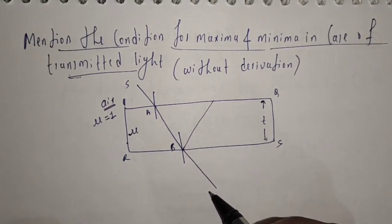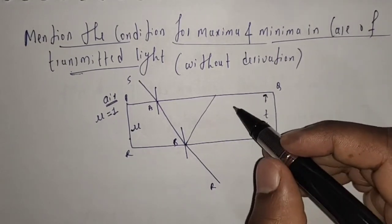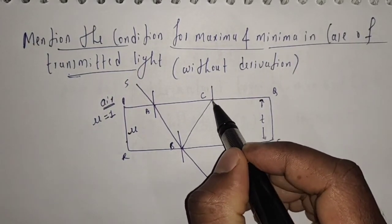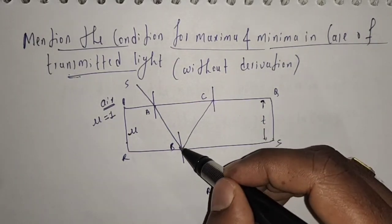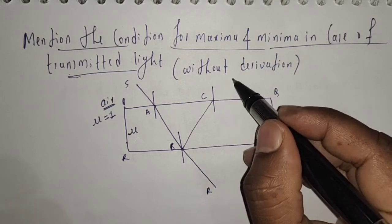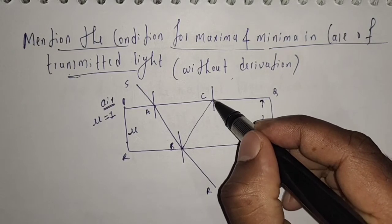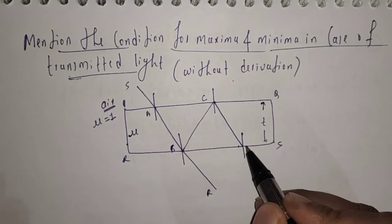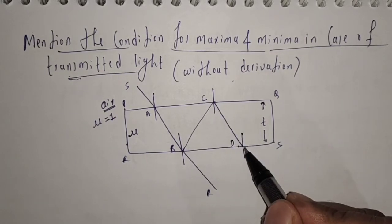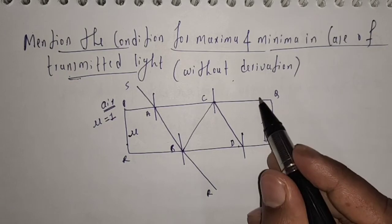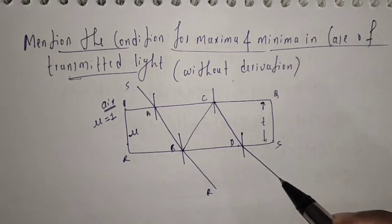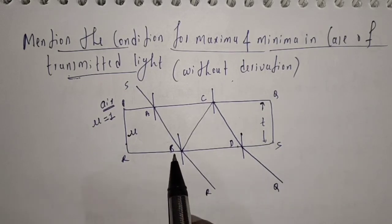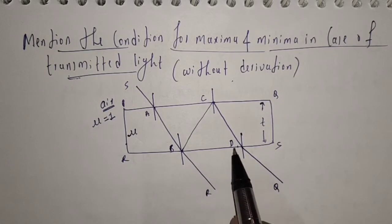I am going to represent the transmitted ray by BR and the reflected ray by BC. When ray BC is incident on the upper surface, some part of the light gets transmitted and some part gets reflected. I am going to draw only the reflected ray here, which I will represent as CD. Again, ray CD gets reflected and some part of it gets transmitted. I am going to represent this transmitted ray by DQ. So there are two transmitted rays: one is BR and another one is DQ.